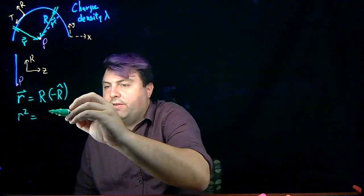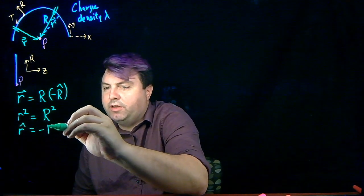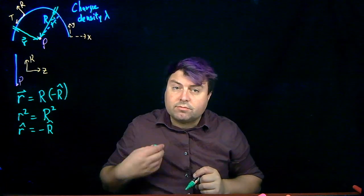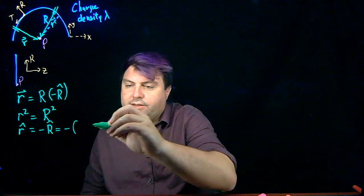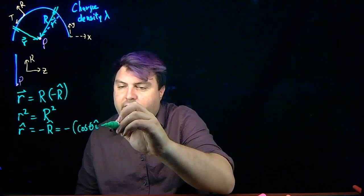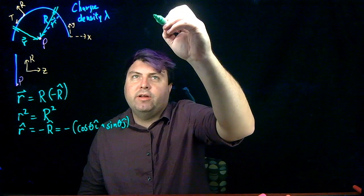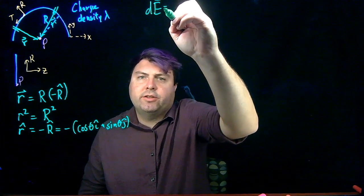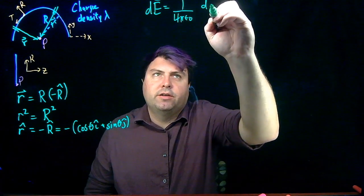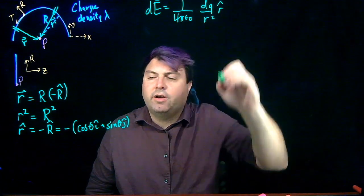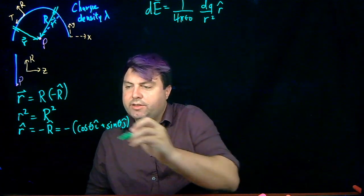I can very quickly do my Pythagorean theorems and things like that. I get r squared is r squared, and my r hat is going to be negative capital R. So one of our definitions of negative capital R hat is I can also define r hat in terms of i hat and j hat, cosine θ i hat, plus sine θ j hat. How does this help me? Well, I have my differential electric field definition is 1 over 4π epsilon naught dq over r squared, r hat. I've already found r squared and r hat in this way. I just need to find dq.